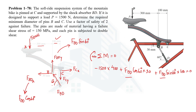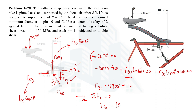Solving this equation with only one variable, FBD equals 5905.4 Newton. Now using the first condition of equilibrium — summation of forces in the x-direction equals zero, taking rightward as positive — FCX is rightward (positive) and FBD_X is leftward (negative): FCX minus 5905.4·cos60° equals zero, giving FCX equals 2952.7 Newton.